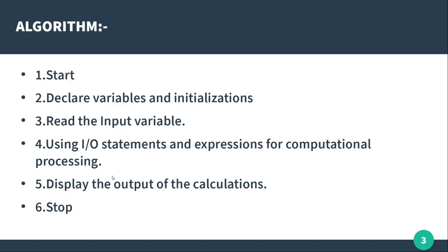Next is using input output statements and expressions for the computational process. What we want to do is add the sum of even and sum of odd numbers, then compute the absolute difference. Next, display the absolute difference. The output is shown, and then the program stops.